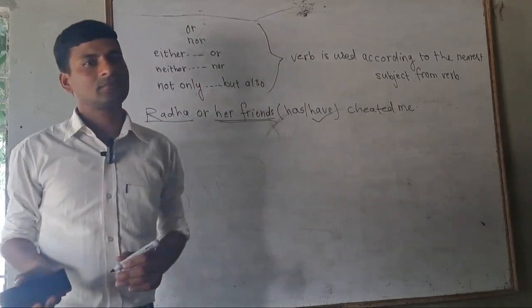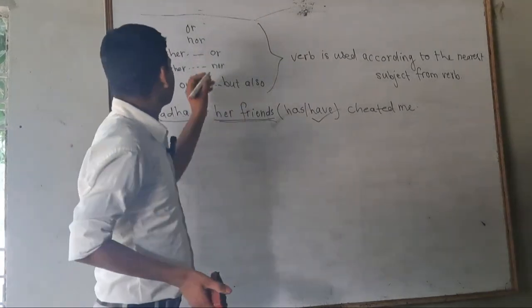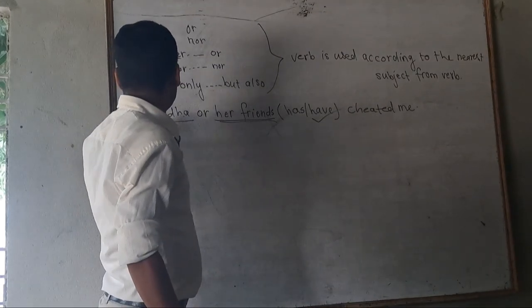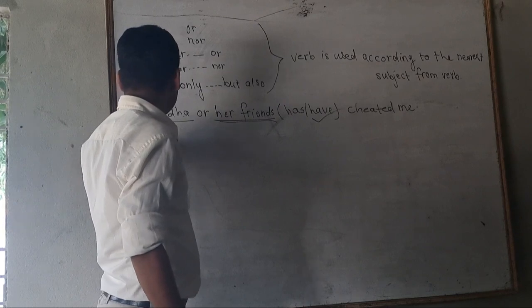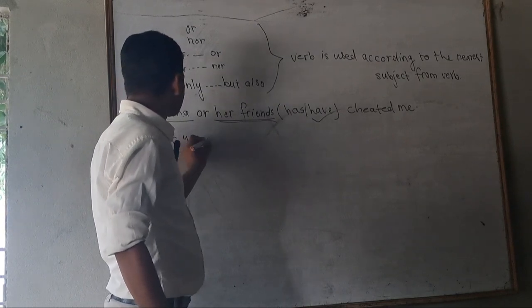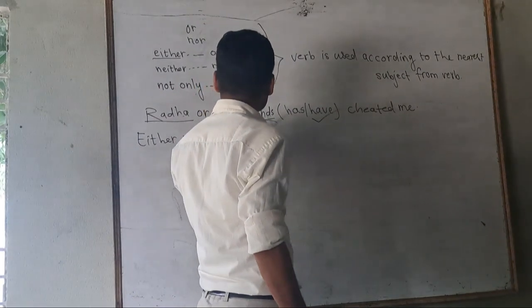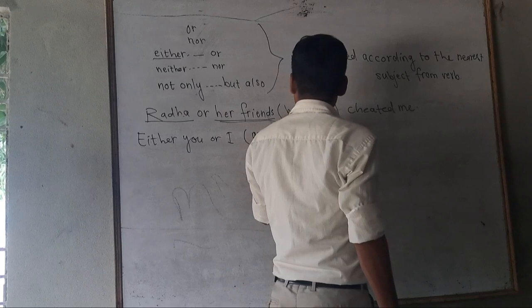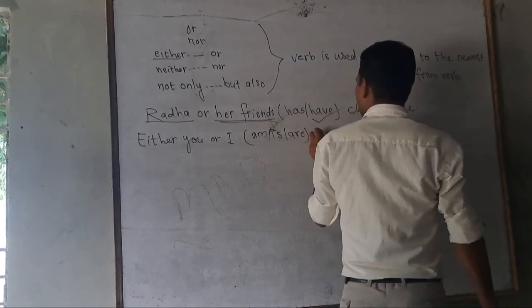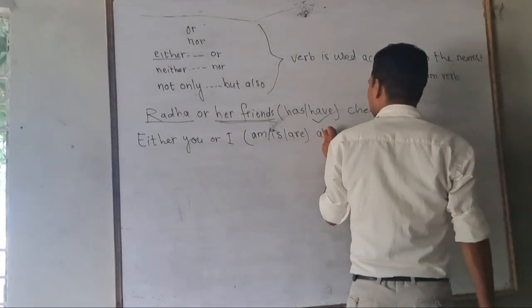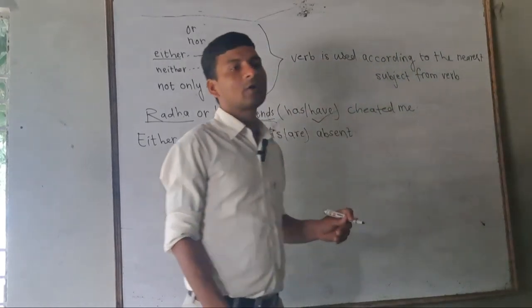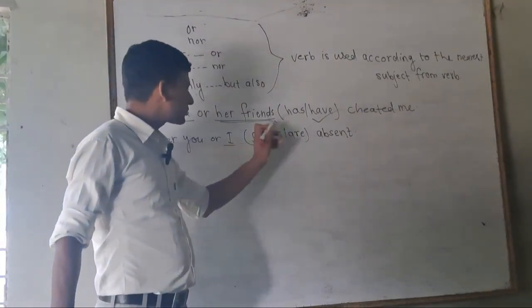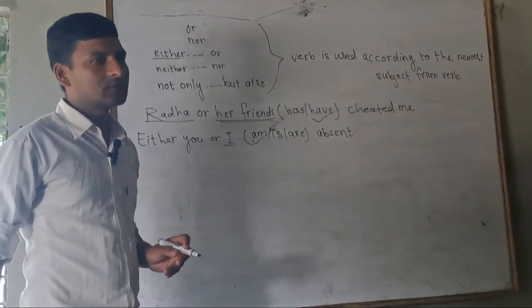In the same way, either you or I am, is, are absent. Either you or I am, is, are absent. Nearest subject is I, so this is correct answer.